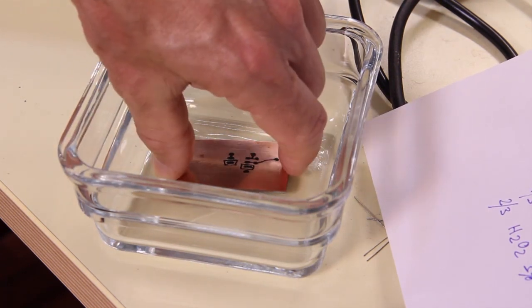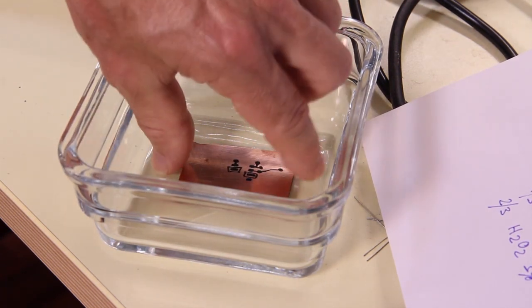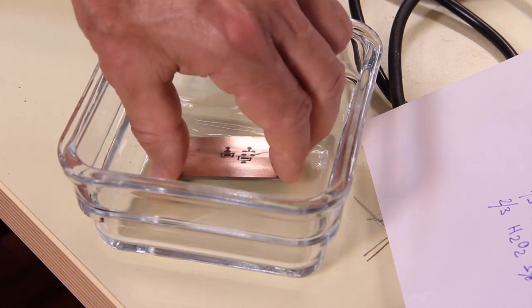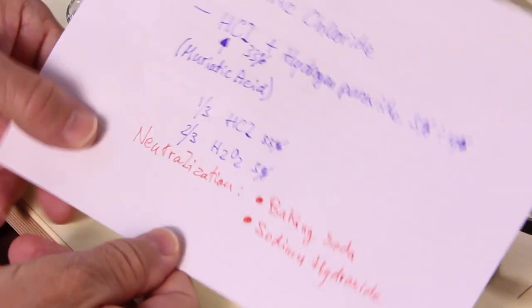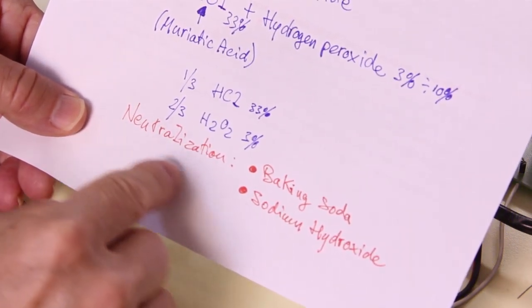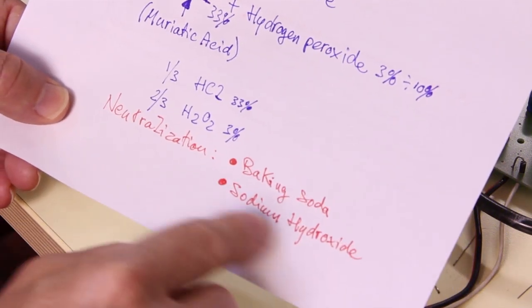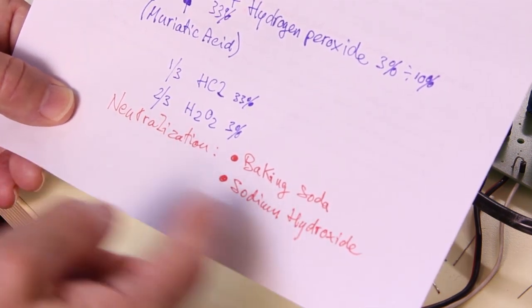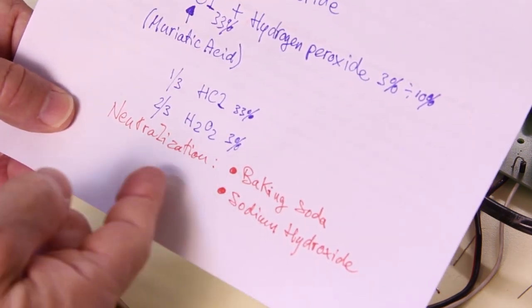When the acid becomes dark green, it is time to throw it away and neutralize it. Sprinkle a bit of baking soda or sodium hydroxide until it is completely neutralized. You can check this with pH paper.